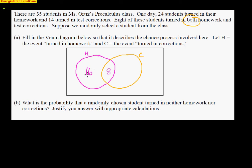Eight turned in both. Fourteen kids turned in their test corrections, so the entire circle for test corrections is 14, which leaves 6 kids that did only their test corrections but didn't turn their homework in. So there are 24 kids that turned in the homework, and 14 kids that turned in their test corrections. If I add up those numbers — 16 kids did homework only, 6 did test corrections only, plus 8 did both — 16 plus 8 plus 6 gives me 30. That means 5 kids out here did neither — they didn't turn in anything.